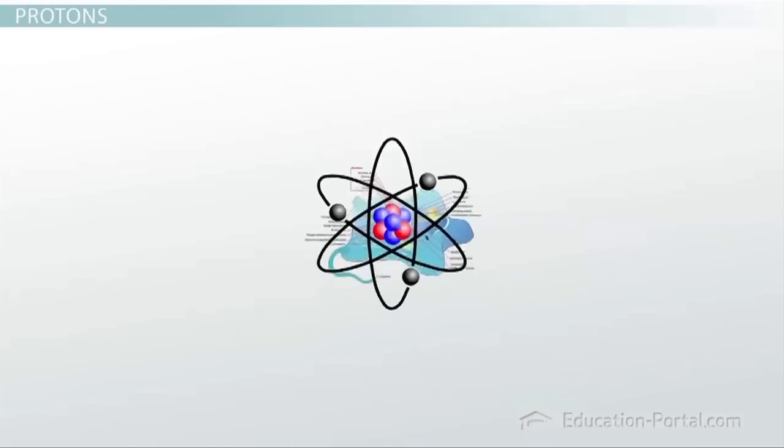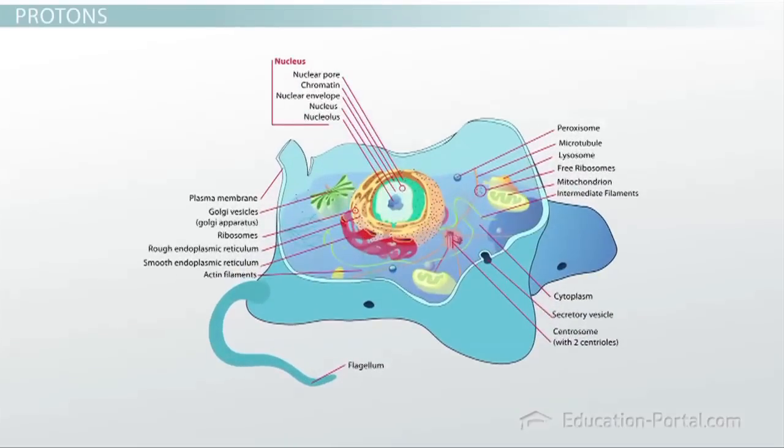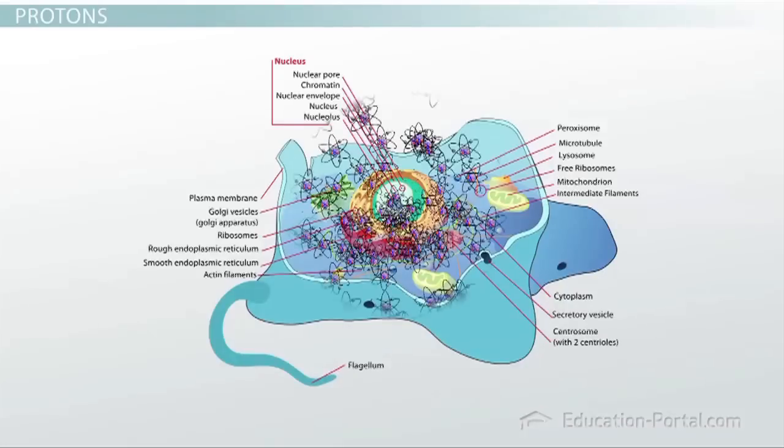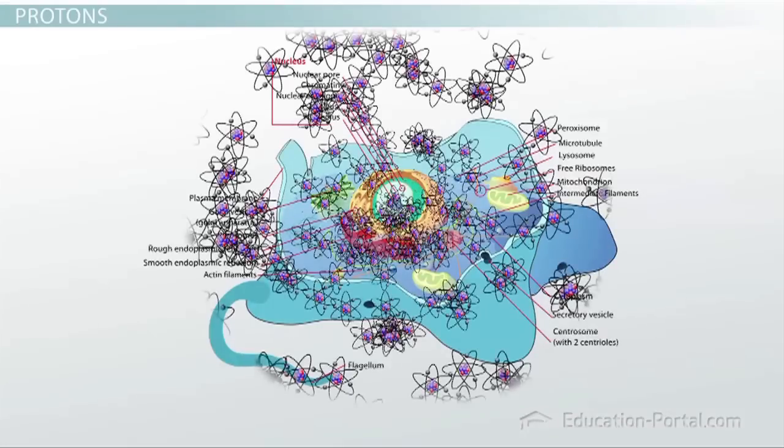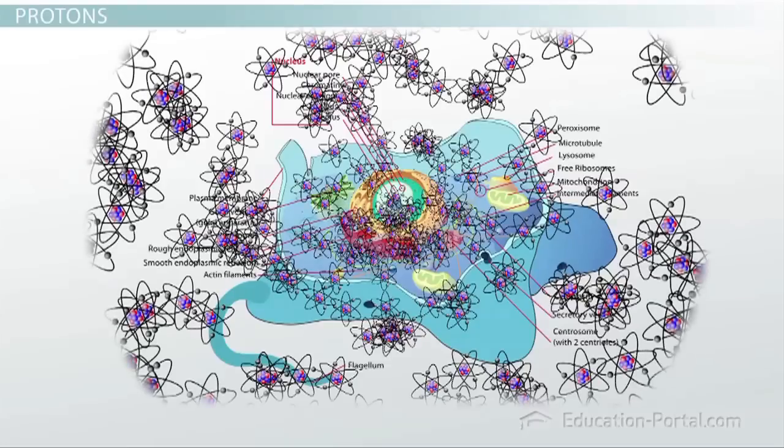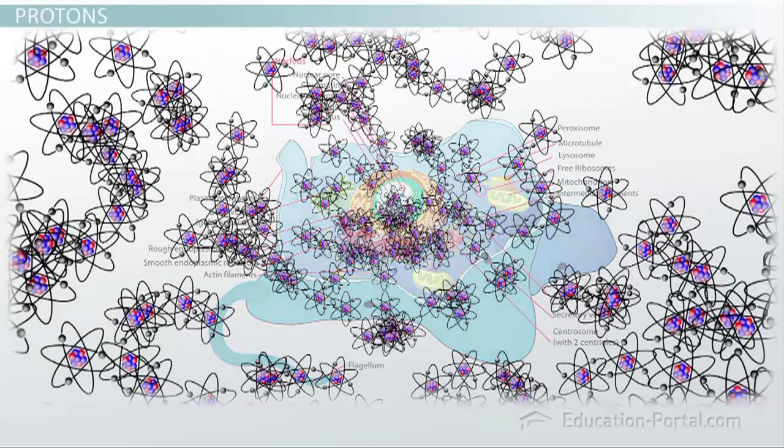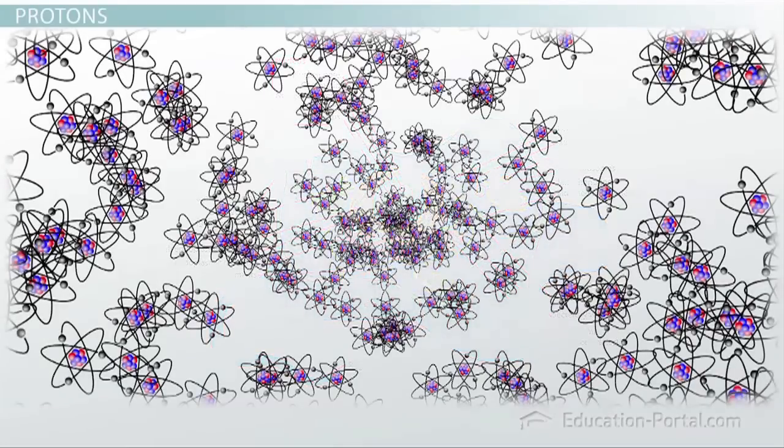One thing that gets a little confusing is that the word nucleus can mean many different things, depending on which branch of science you are in. In chemistry, the word nucleus refers to the nucleus, or center, of an atom. In biology, the word nucleus refers to the nucleus of a cell. To give you a visual idea of the difference between an atom and a cell, there are trillions upon trillions of atoms that make up each living cell. And atoms are not living. They are the building blocks of everything.